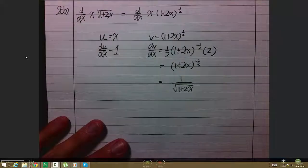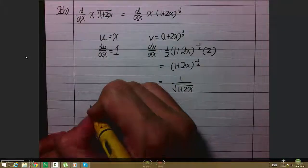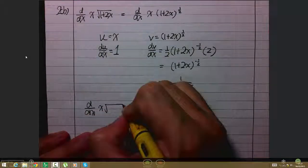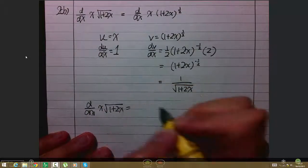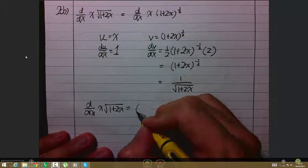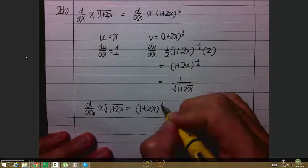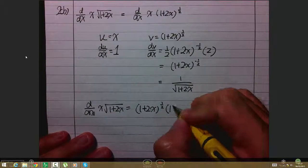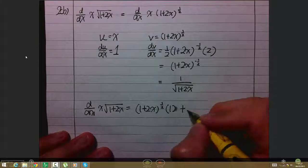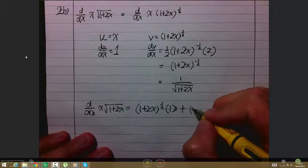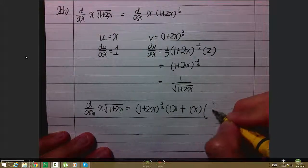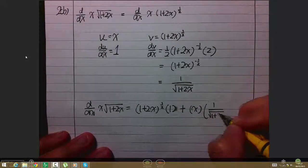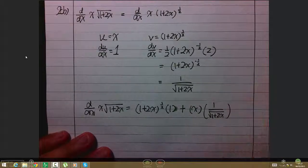Now we apply the product rule formula: v·du/dx + u·dv/dx. So v·du/dx is (1+2x)^(1/2) times 1 plus u, which is x, times dv/dx, which is 1/√(1+2x).